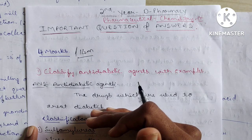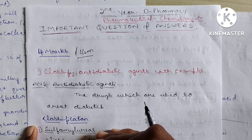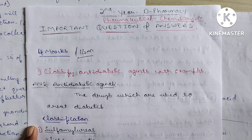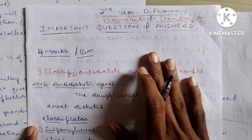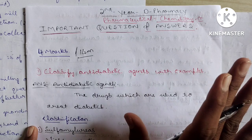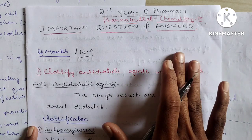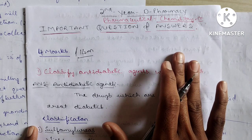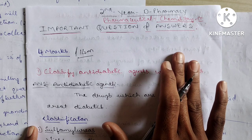They will ask questions in the form of A and B parts — for example, A: classify anti-diabetic agents, B: classify anti-microbial agents, in this fashion. You can take a screenshot of these questions, but if you want clear notes you can WhatsApp me.